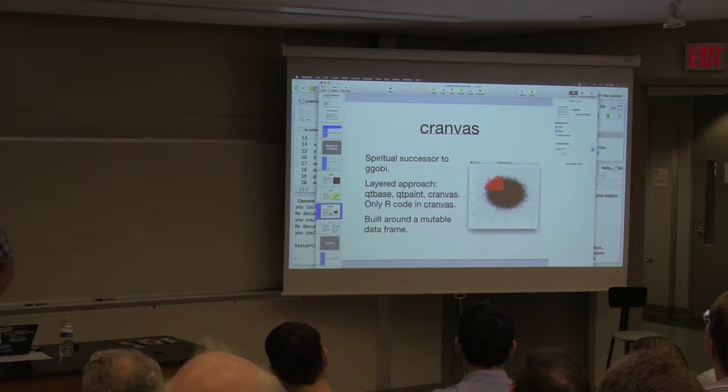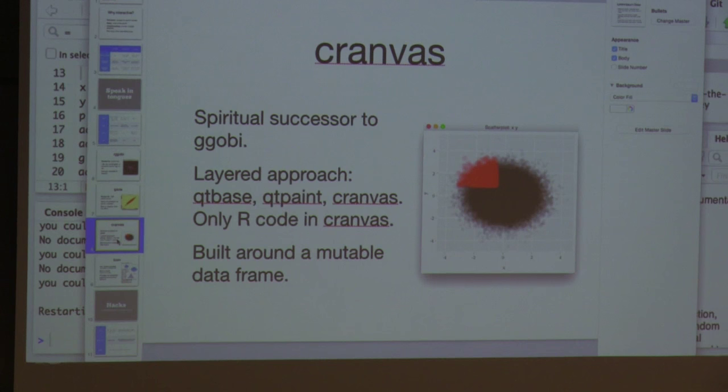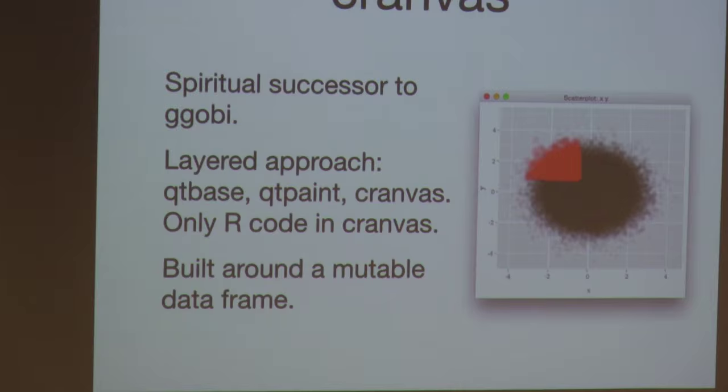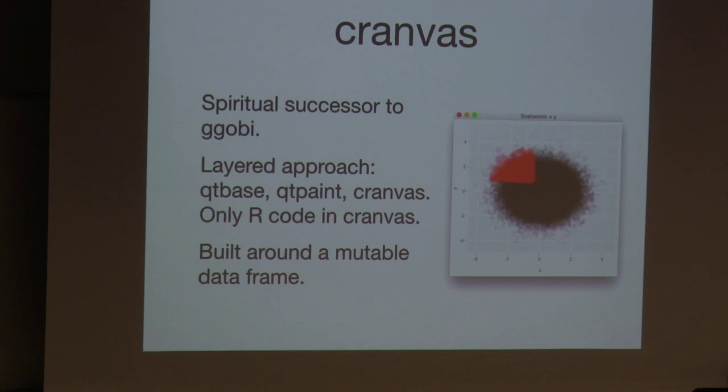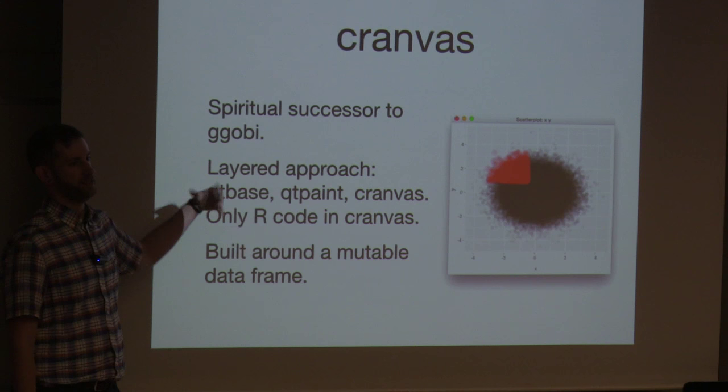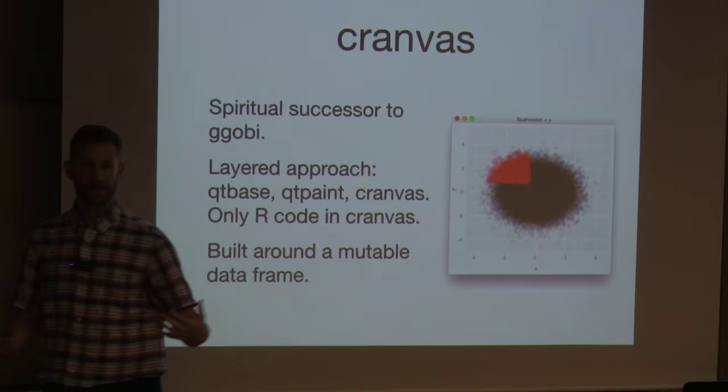So Cranvas was really motivated by the drawback of GGobi, which was that it was really hard to install. You had to install a separate package. It was painful for us to build the binaries on Mac and Windows and Linux. And so the goal of Cranvas was basically just to let all the R infrastructure take care of that. If you could put everything into an R package, then we have this great way of distributing packages to everyone. Everyone knows how to install an R package. That's really easy to do. So the goal was to make this layer of abstraction. If you wanted to work on Qt-base, you needed to be a really good C++ programmer. If you needed to work on Qt-paint, you could get by as long as you knew a little C++. And then if you want to work on Cranvas, you don't need to know any C++. You're just using the R functions exposed by the lower levels.